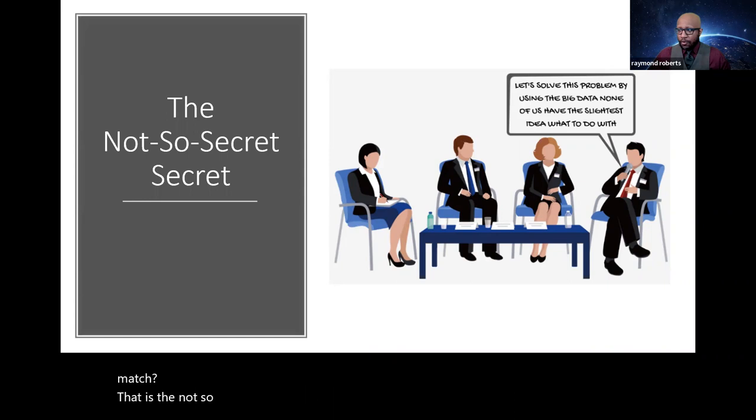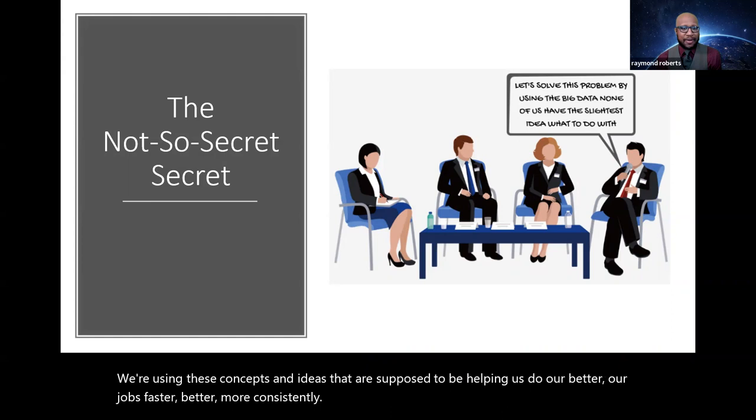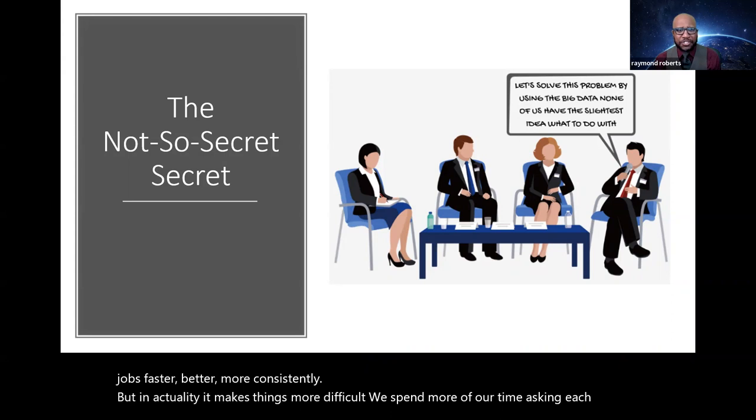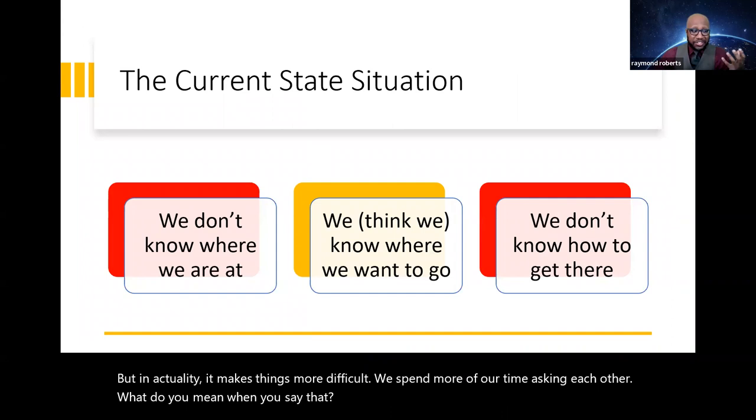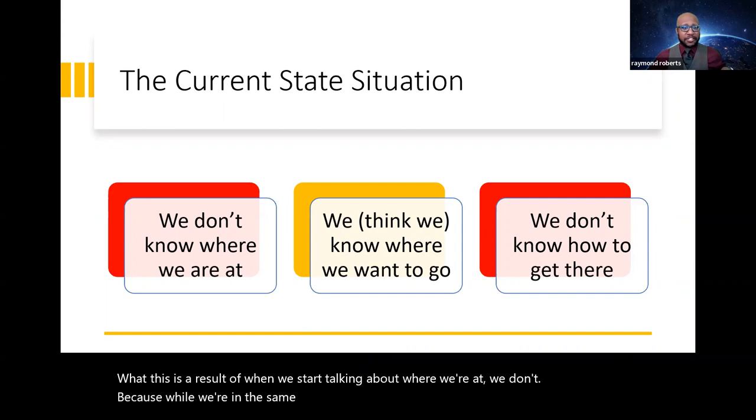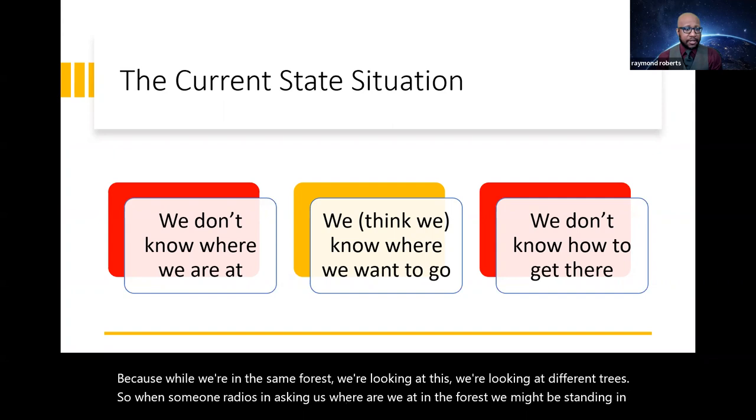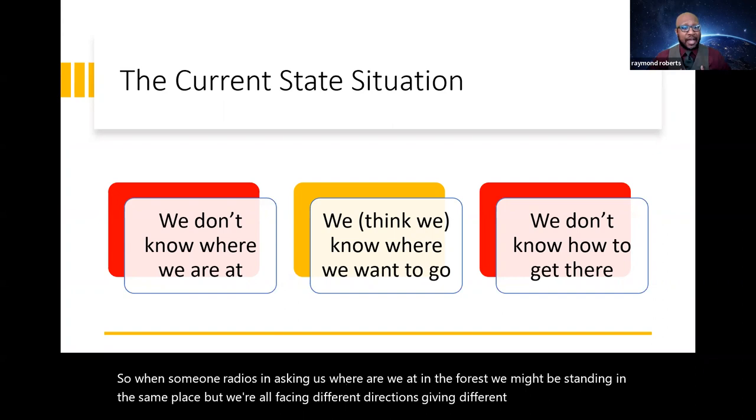We're using these concepts and ideas that are supposed to be helping us do our jobs faster, better, more consistently. But in actuality, it makes things more difficult. We spend more of our time asking each other, what do you mean when you say that? What this is a result of, when we start talking about where we're at, we don't actually know. Because while we're in the same forest, we're looking at different trees. So when someone radios in asking us, where are we at in the forest? We might be standing in the same place, but we're all facing different directions, giving different descriptions to the people who are trying to find us. So that's why that's marked in red.